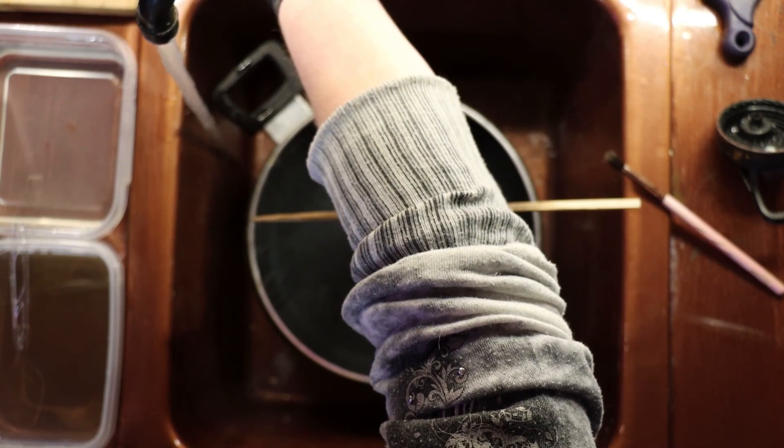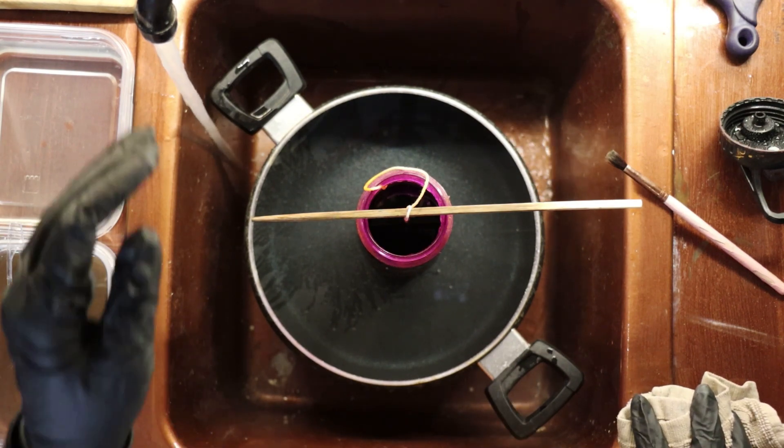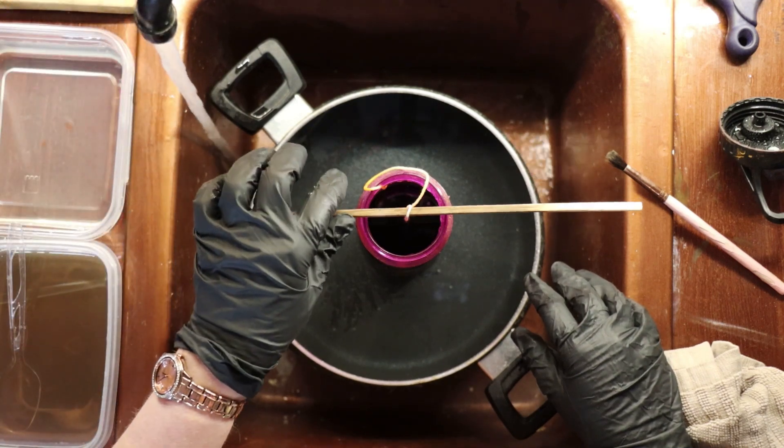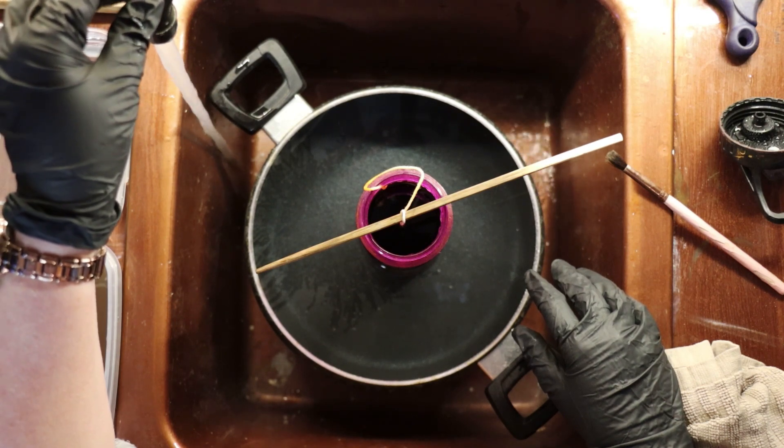Again, I'll heat the water back up. You never want to dispose of the ferric nitrate solution down your sink. It is harmful to the environment, which is why we have the separate containers so that we can place the piece and rinse out our brushes in the baking soda solution and the plain water.